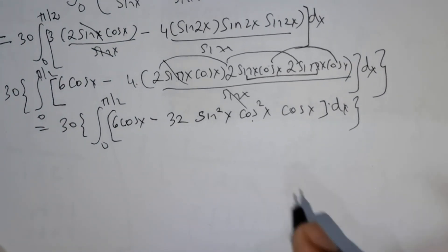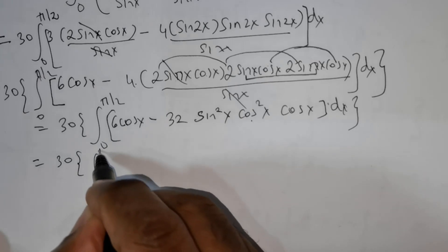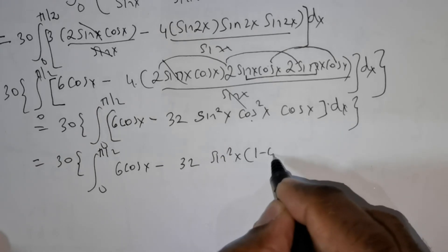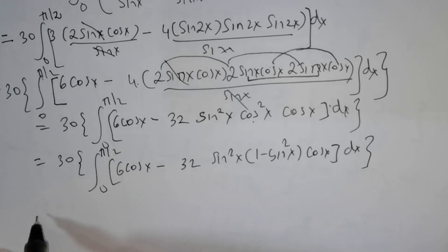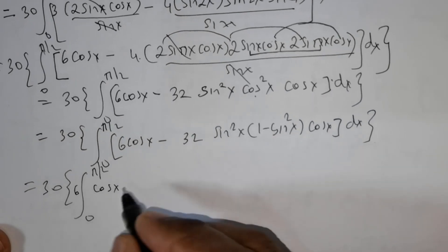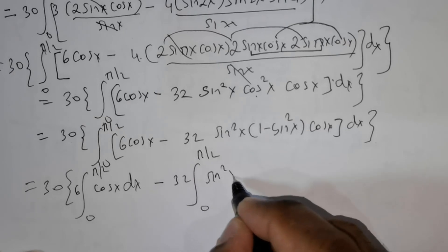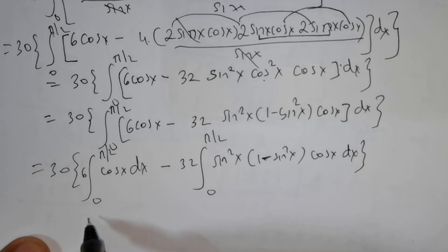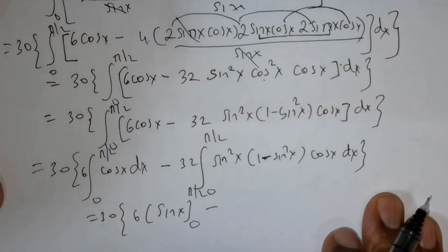Now I would like to write cos squared x as 1 minus sin squared x. So this becomes 30 times integral from 0 to pi over 2 of 6 cos x minus 32 times sin squared x times (1 minus sin squared x) times cos x, times dx. We then distribute, getting sin squared x times (1 minus sin squared x) times cos x.